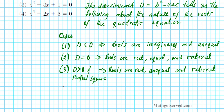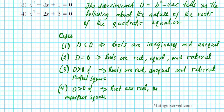Case number four: what if your discriminant is greater than zero — positive — and an imperfect square? An imperfect square like 3 or 7, whose square root is not an integer. In this case, your roots are going to be real and unequal. And they're going to be irrational, because you're taking the square root of an imperfect square, so you're going to have that square root component in your roots. These are the four cases using the discriminant to determine the nature of the roots of a quadratic.